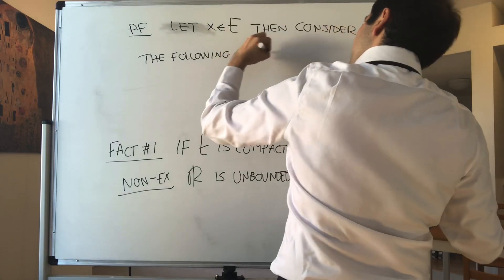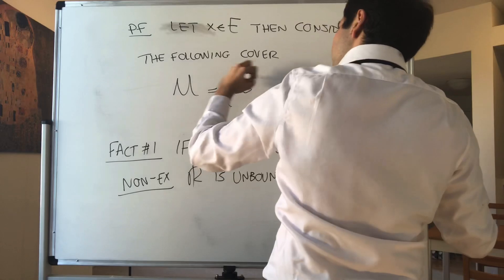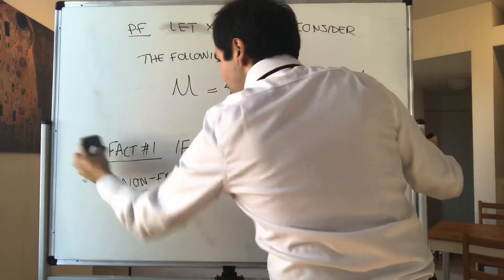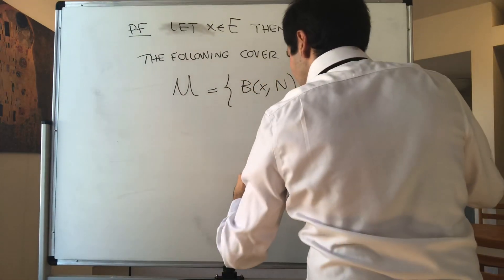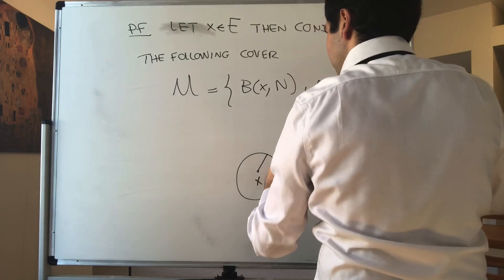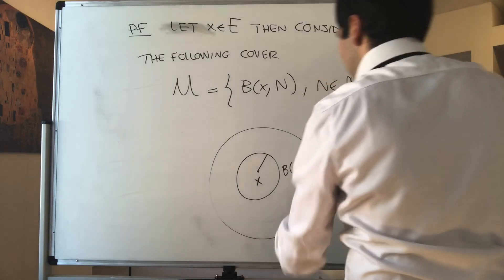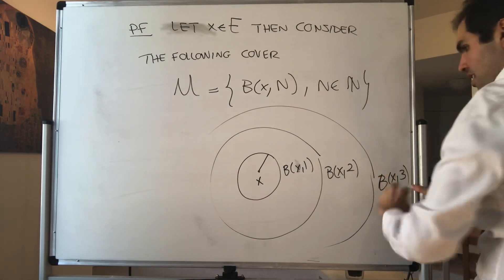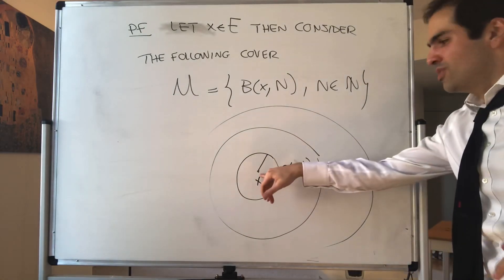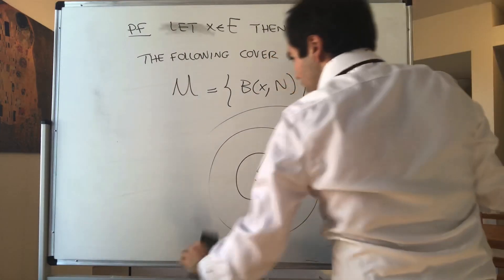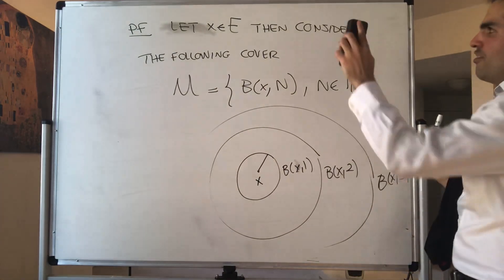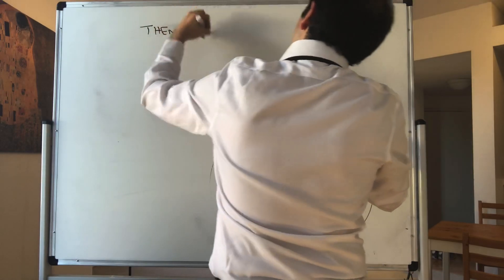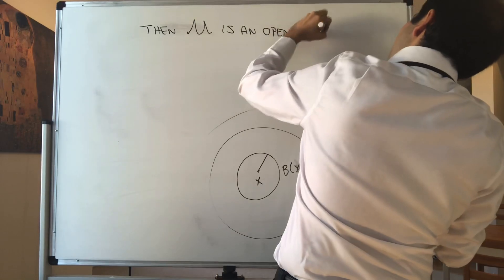Consider the following cover U — namely, just balls centered at X with radius N, where N is a natural number. You start with the ball centered at X and radius 1, then the ball centered at X and radius 2, ball centered at X and radius 3, et cetera. It's almost like a water wave — you start with X and the ripples are your open cover. You can show that U is an open cover of E.